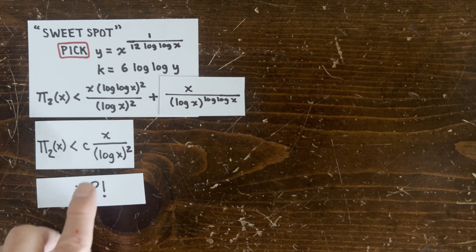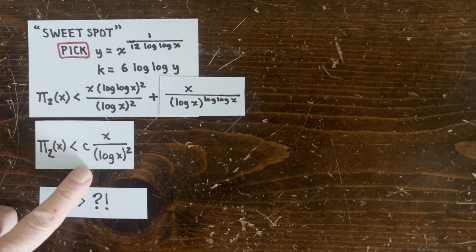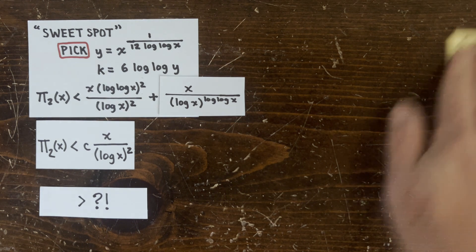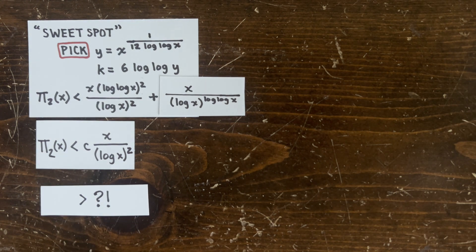Mathematicians after Brun were able to improve his result to x over log x squared. And since the denominator is bigger, twin primes thin out way faster than regular primes. But unlike for regular primes, Brun couldn't show a lower bound on twin primes. Even a super weak lower bound like log log log x would be enough to prove the twin prime conjecture. But no luck so far.